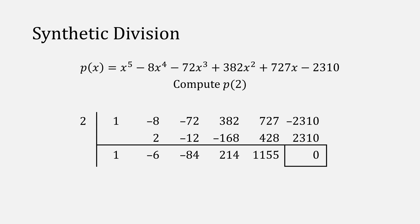Notice the same numbers, 1, minus 6, minus 84, 214, 1155, and 0. So we know that p of 2 is equal to 0, but we also found the quotient q with x to the 4th, minus 6x to the 3rd, minus 84x squared, plus 214x, plus 1155.